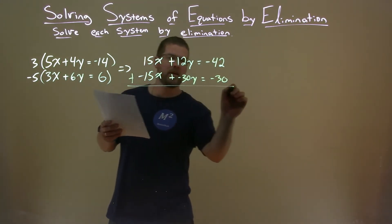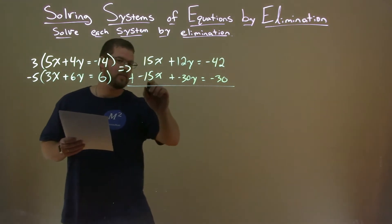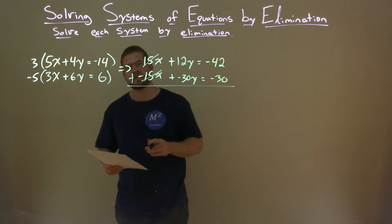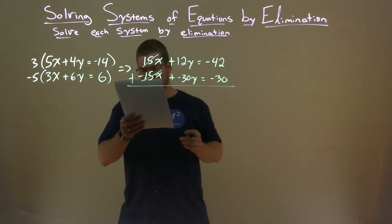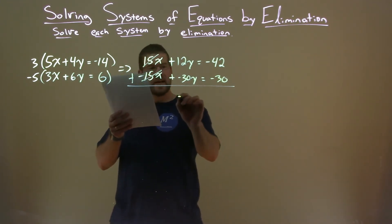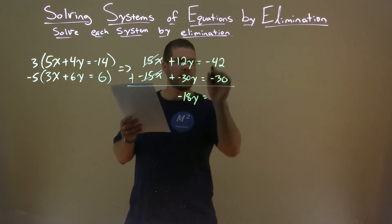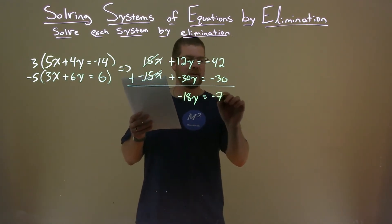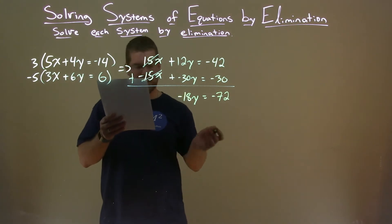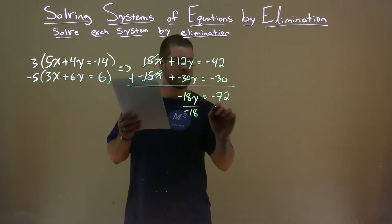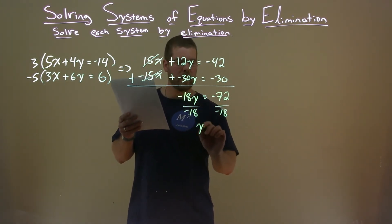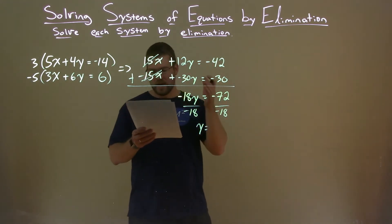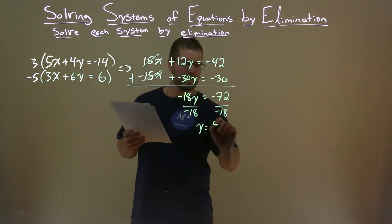We add the two equations together. Our goal is to get the x's to eliminate, and they do. 15x plus negative 15x is 0. 12y plus negative 30y is negative 18y. And negative 42 plus negative 30 is negative 72. Divide both sides by negative 18. Negative 72 divided by negative 18 — negative divided by negative is positive — so y equals 4.